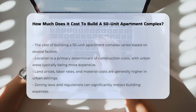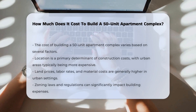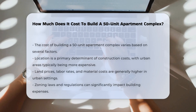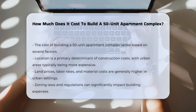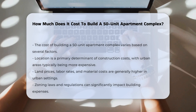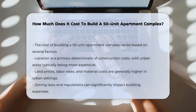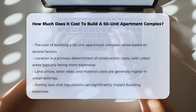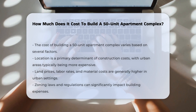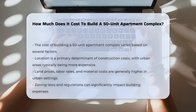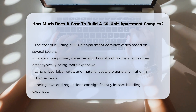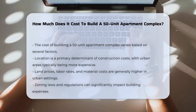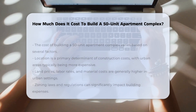The cost of building a 50-unit apartment complex varies significantly based on several factors. Location plays a crucial role in determining construction costs. Urban areas typically have higher expenses due to land prices, labor rates, and materials. Zoning laws and regulations can also affect building costs.